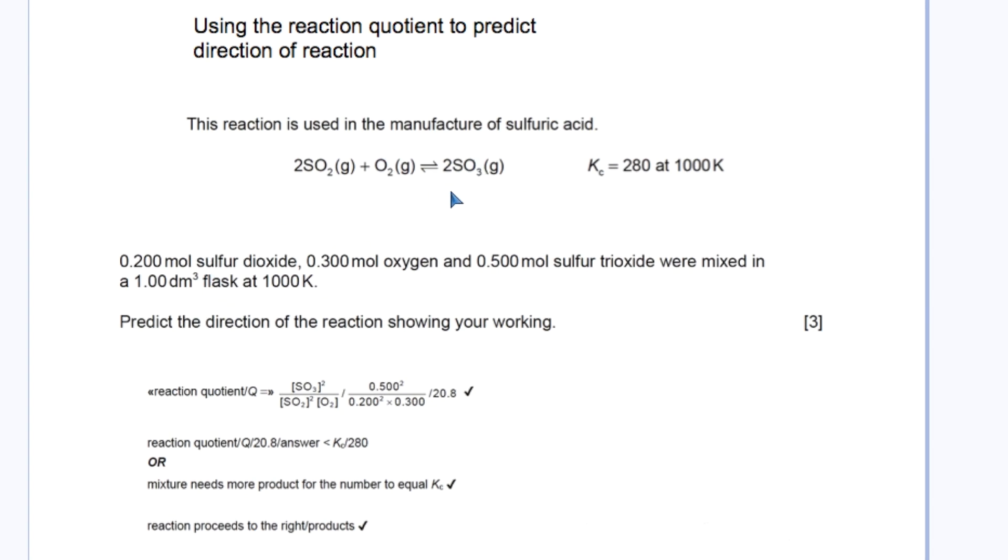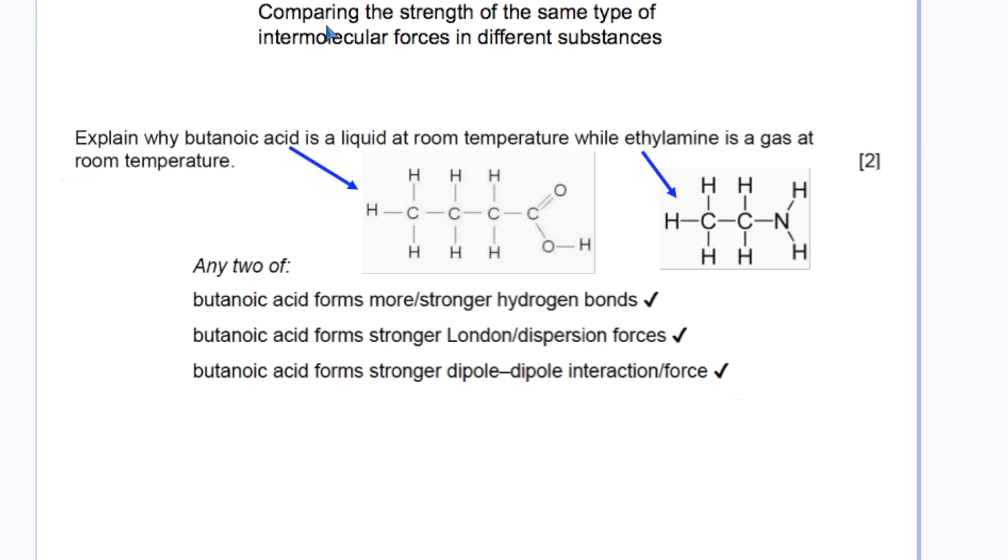This is just a tiny extract from the November 2018 exam. Another point noted by examiners was comparing the strength of the same type of intermolecular forces in different substances. Here the two substances were butanoic acid and ethylamine, drawn here for you. The first thing to note, and what most students would mention scoring only one of two marks, is that the hydrogen bond is stronger in butanoic acid than in ethylamine because oxygen is more electronegative than nitrogen.